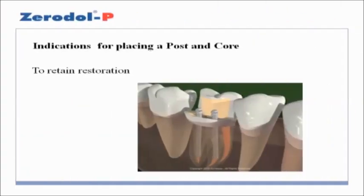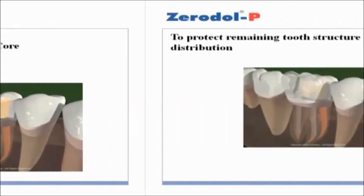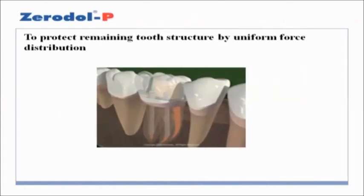Indications for placing a post and core. To retain restoration: the primary purpose of a post is to retain a core in a tooth with extensive loss of coronal tooth structure. To protect remaining tooth structure by uniform stress distribution achieved by the post and rigidity for the core, which helps the tooth to function effectively.